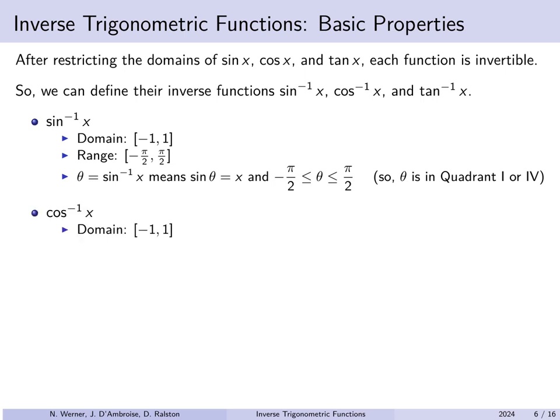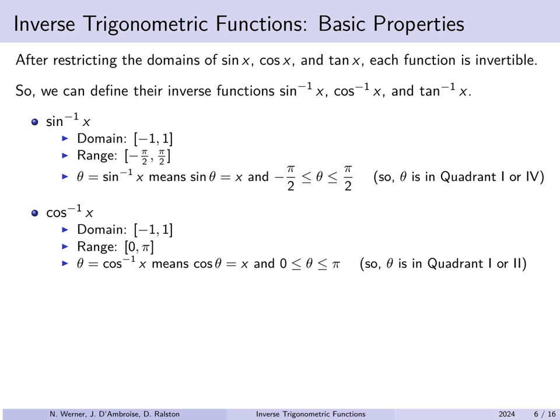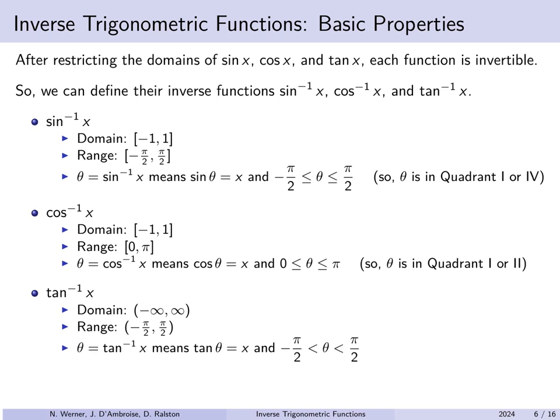Similarly for cosine, the domain of arc cosine is from minus 1 to 1, and the range of arc cosine is from 0 to pi. So theta equals arc cos of x means that cos theta is x, and that angle theta is between 0 and pi — in other words, quadrant 1 or 2. For arc tangent, the domain is all real numbers, the range is from minus pi over 2 to pi over 2 (not including endpoints), and theta equals arc tan of x means theta is in quadrant 1 or 4.